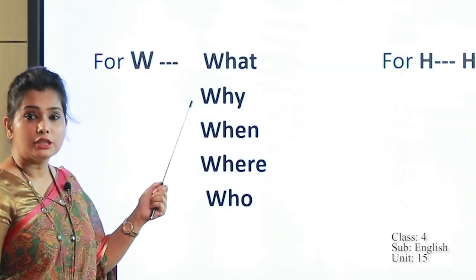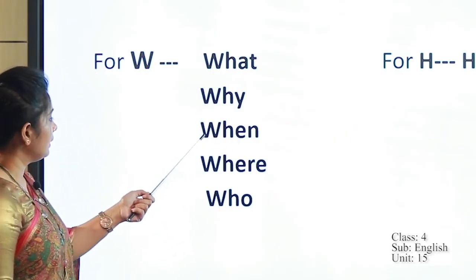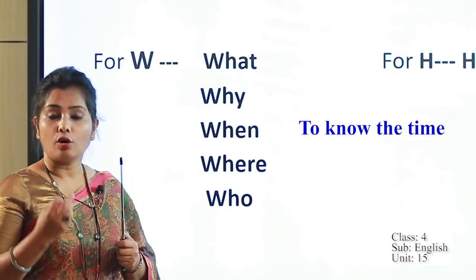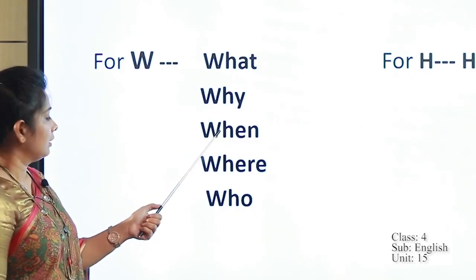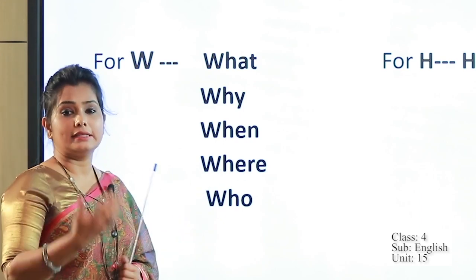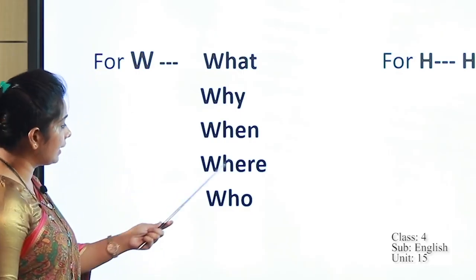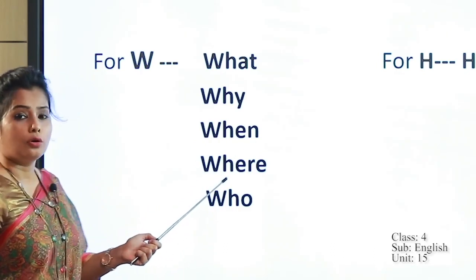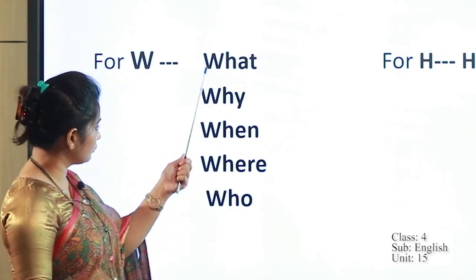Then comes 'when' — it means we want to know the time when the incident happened. We use 'when' for time. 'Where' indicates the place — where did the incident happen? To recognize the place, we use 'where'. 'Who' is the indication of the subject — who did the work?